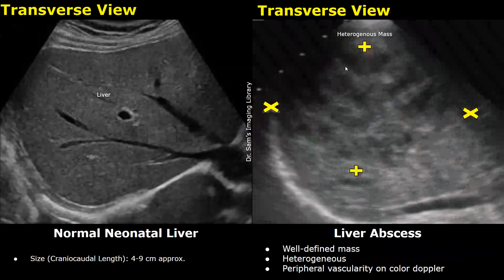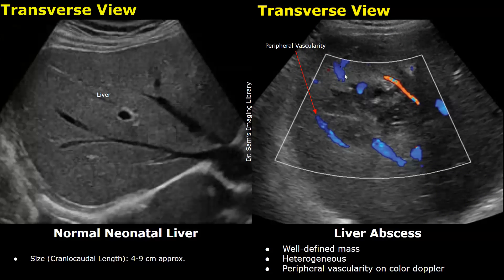A liver abscess usually appears as a well-defined heterogeneous mass. On color Doppler, peripheral vascularity will be seen — we can see vascularity at the border of the mass. These features of a well-defined heterogeneous mass with peripheral vascularity are usually seen in a liver abscess.